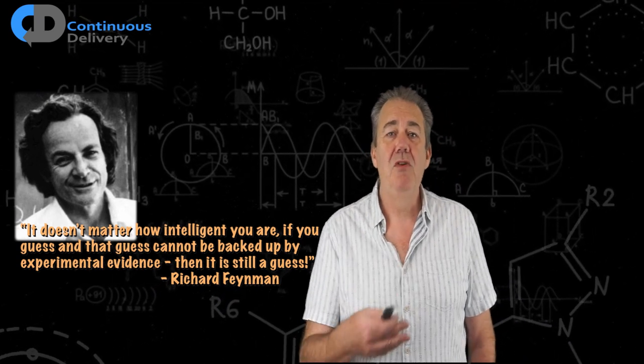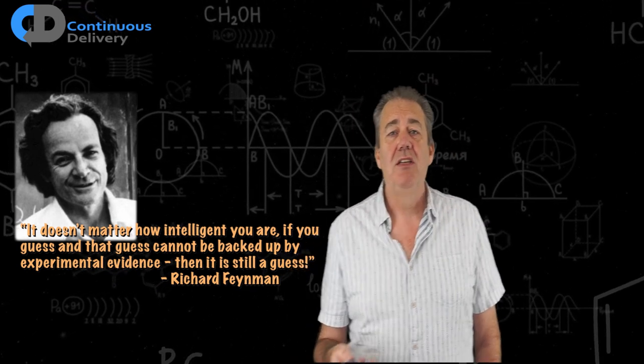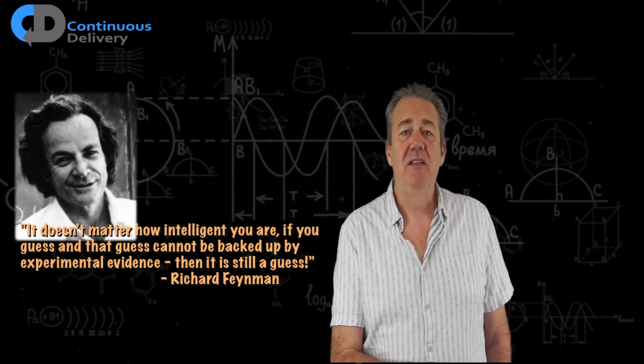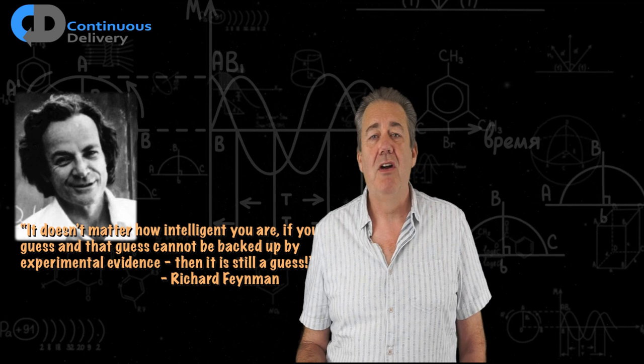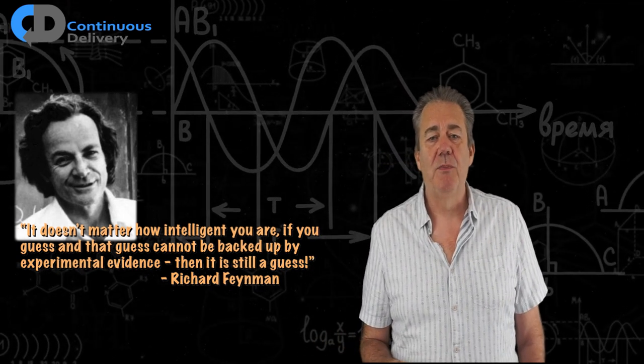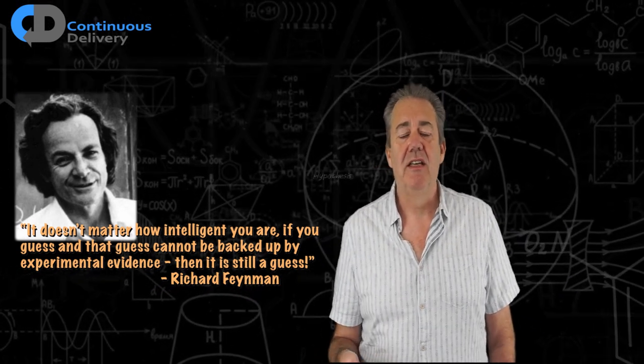Part of that move, part of the adoption of a more scientific engineering style approach, is really to be more experimental. To, as Feynman says, start moving from guesswork to validating our ideas to experimentation. So what does it take to be more experimental? I think there are four attributes that we should consider in this context.